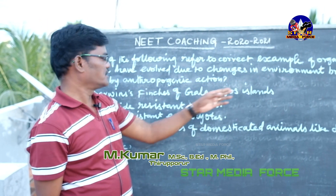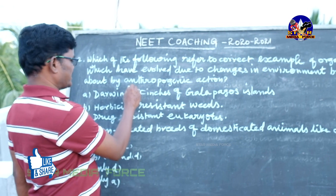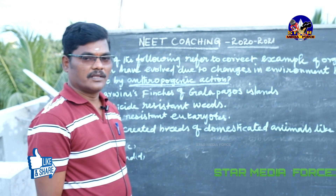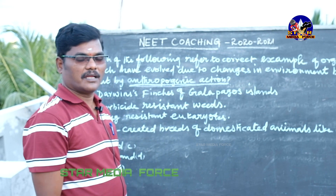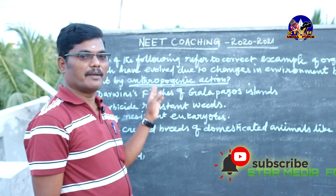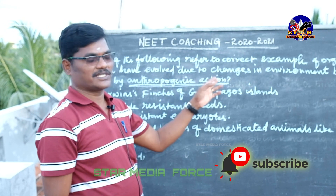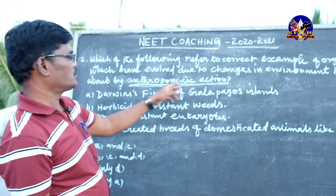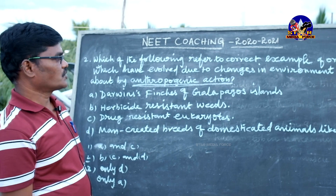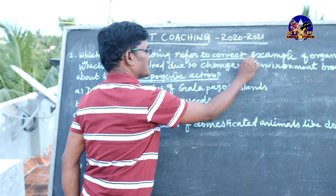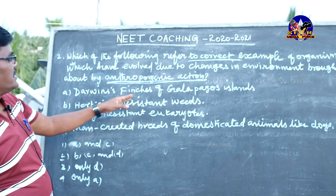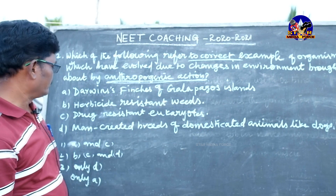Second question: which of the following refers to the correct example of organisms that have evolved due to changes in the environment brought about by anthropogenic action? Anthropogenic means actions influenced by human beings on the environment or organisms — that is called anthropogenic or man-made action. You have to select the correct example from the four choices. One option is Darwin's finches of the Galapagos Islands.